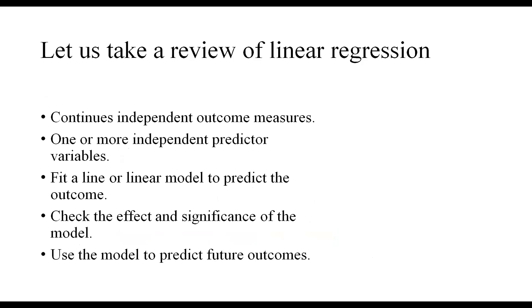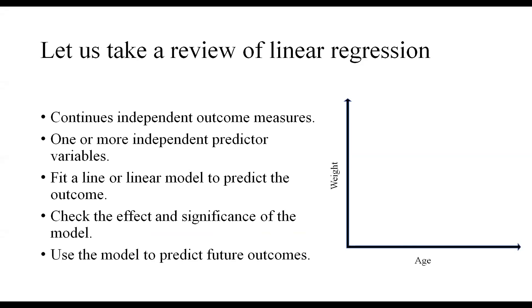In linear regression, we had a continuous independent outcome measure — in the sense we are not measuring it repeatedly, we are taking samples from different individuals. Let's say that measure is weight, with one or more independent predictor variables, which can be categorical or continuous. For illustration, let's say it's age. We have data of weight against age, and by the linear model, we would like to fit a line through that data which best predicts weight using age. We check the effect and significance of the model with R-squared and the p-value of significance of individual parameters, and we use that model to predict — if we have a specific age, we can predict that individual's weight.